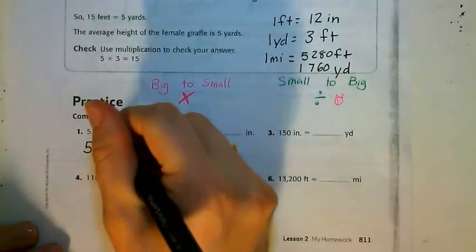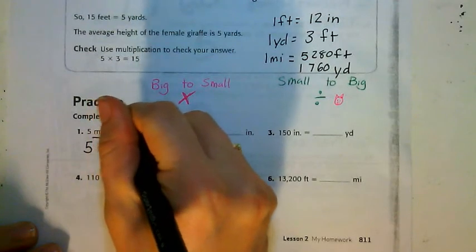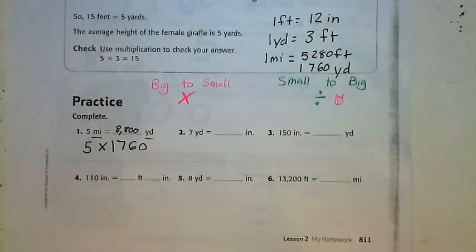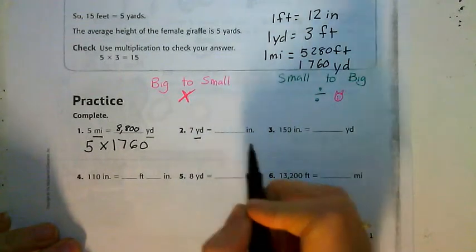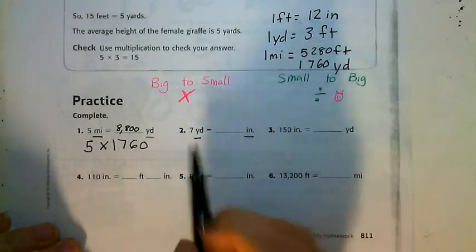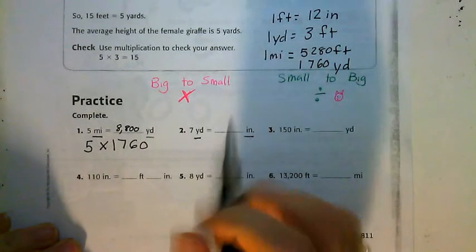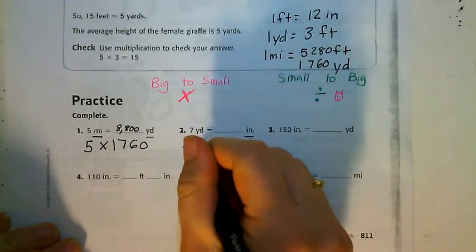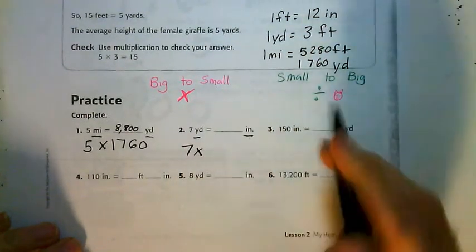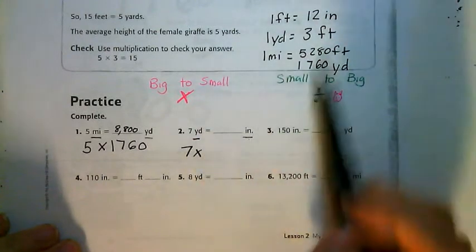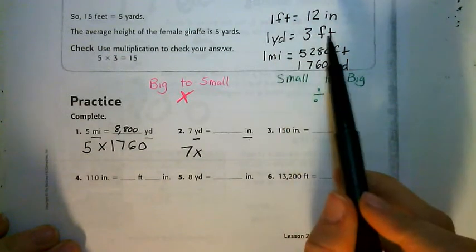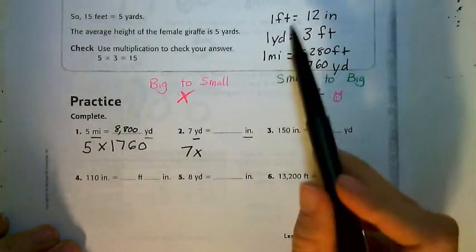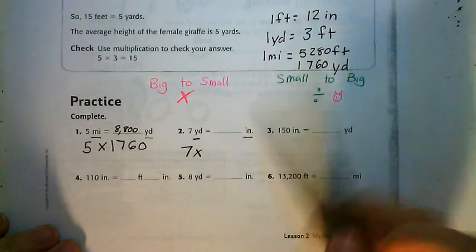Okay, let's look at the next one. 7 yards equals how many inches? I'm going from yards to inches. I'm going from big to small, so I'm going to need to multiply 7. But what am I going to multiply it by? Let's go up here and look—going from yards to inches. So I need to find where it talks about yards and inches. Well I have yards and feet, but I don't have anything that talks about yards and inches. So does that mean I'm stuck? Does it mean I can't move on? No, not at all. It means I just have to do a little bit more math.